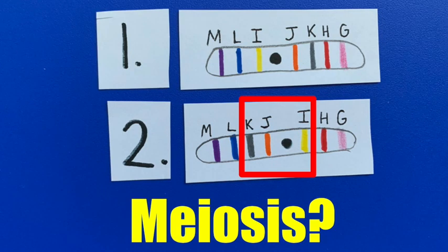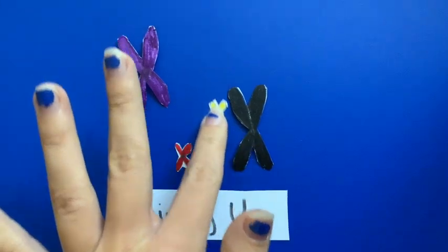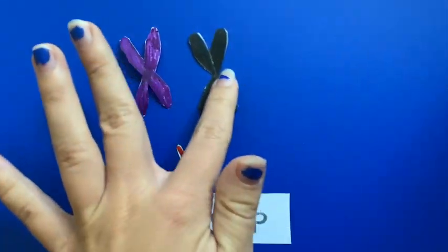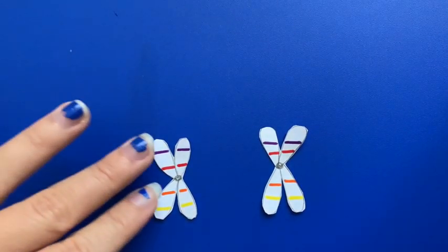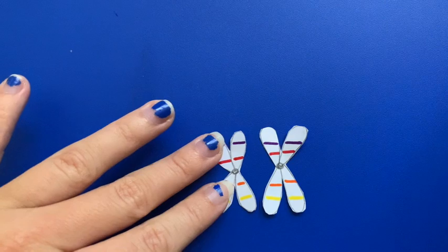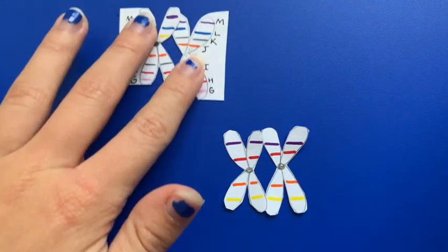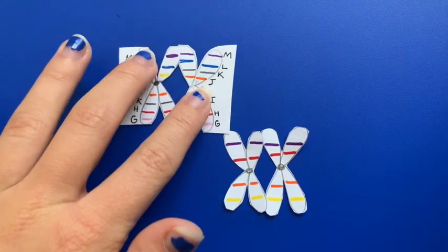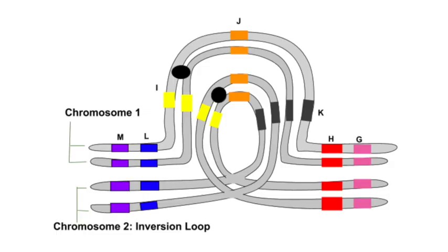What effect will this have on meiosis? The goal of meiosis is to maximize the pairing of homologues. In a perfect world, when our two chromosomes pair up, the alike chromosomal segments and genes would all align correctly. However, if we look at our two chromosomes above, we notice that our segments don't quite match up. In order to maximize pairing, a structure called an inversion loop is formed.